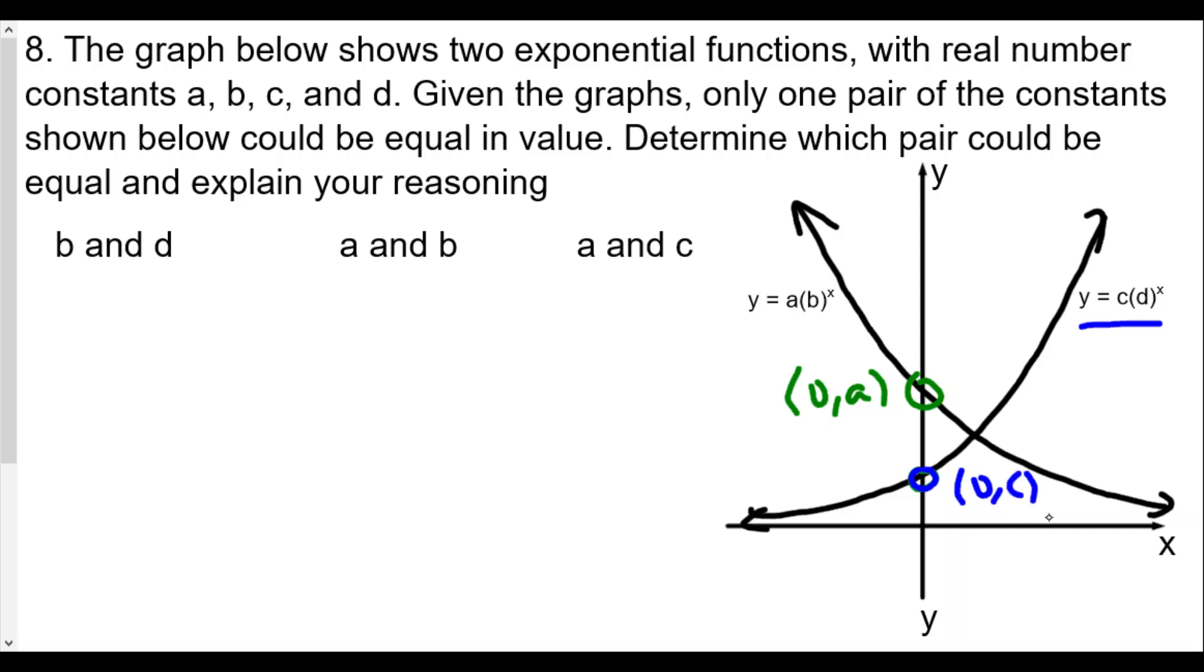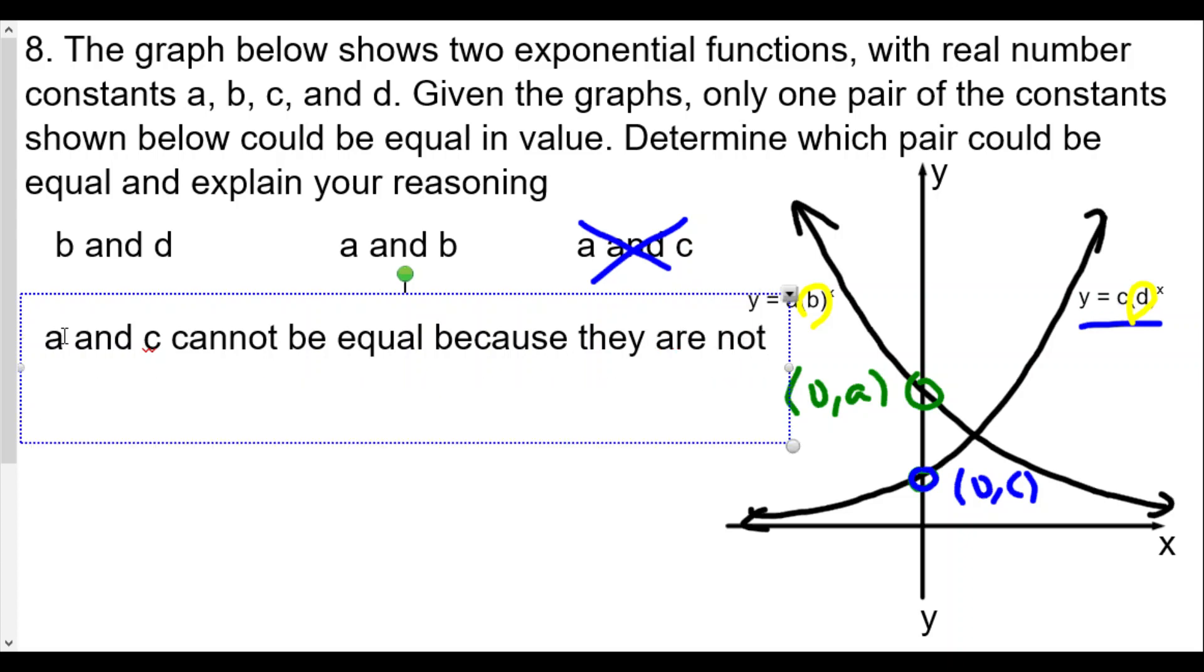When x equals 0, d to the zero power is 1, and therefore c times 1 is just c. Notice that they're not the same value, and therefore we cannot have a and c being equal to each other. If they were equal, they would cross each other at the y-axis, having the same y-intercept. So a and c cannot be equal because they are not intersecting on the y-axis.